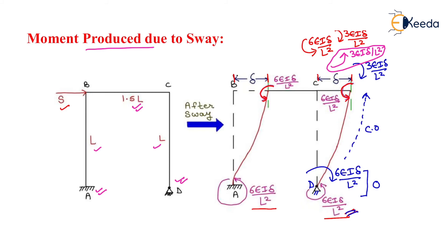Due to sway, we have calculated the moments developed at joints A, B, C, and D. The magnitude of moment at A and B is 6EI·delta upon L² in the anticlockwise direction. At C, there is a net moment of 3EI·delta upon L², and there is no moment in beam BC. After finding these sway moments, we repeat the moment distribution method to find the final moments in each member. That is all about the moment distribution method due to sway. Thank you very much.